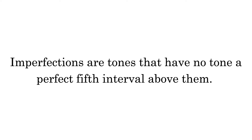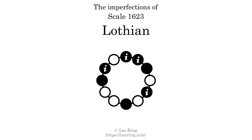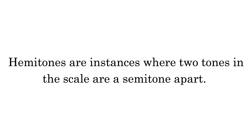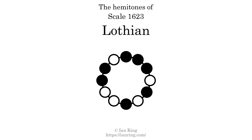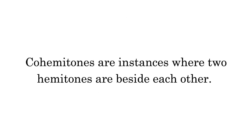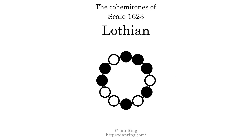Imperfections are tones that have no tone a perfect fifth interval above them. This scale has 4 imperfections. Co-hemitones are instances where two tones in the scale are a semitone apart. This scale has 3 hemitones. Co-hemitones are instances where two hemitones are beside each other. This scale has one co-hemitone.